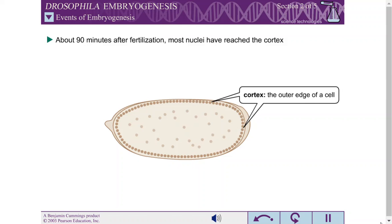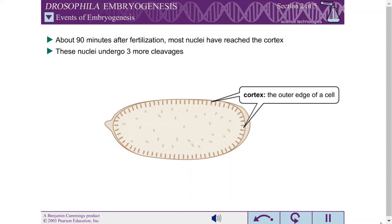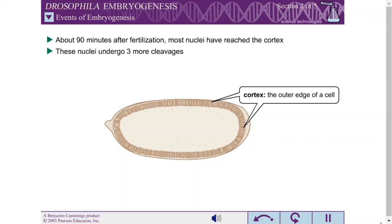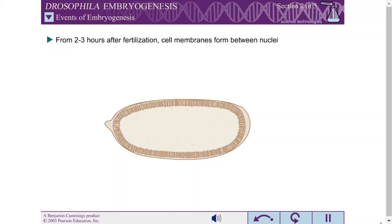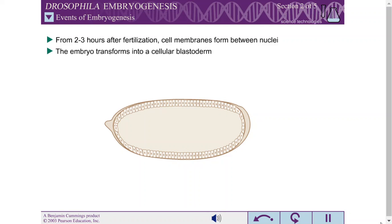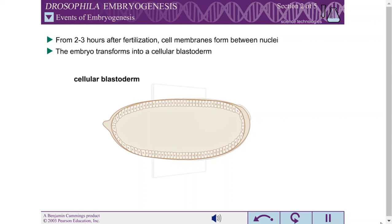At this point, the nuclei gain the ability to transcribe RNA polymerase 2 genes and produce proteins. They undergo another three rounds of cleavage, leading to a dense packing of about 6,000 column-shaped nuclei enclosing the central yolk. During a one-hour period from two to three hours after fertilization, cell membranes form between adjacent nuclei. By three hours after fertilization, the embryo has been transformed into a cellular blastoderm — essentially a hollow ball of cells.